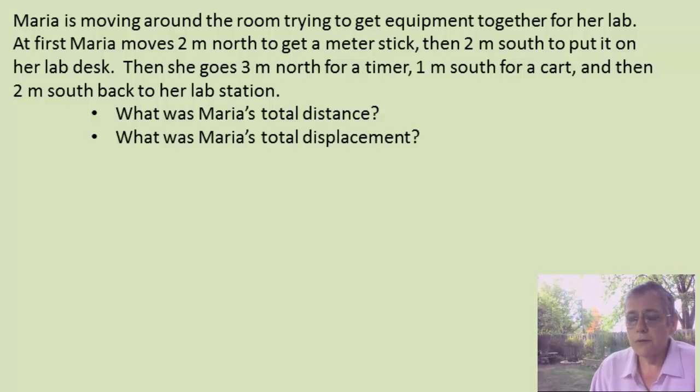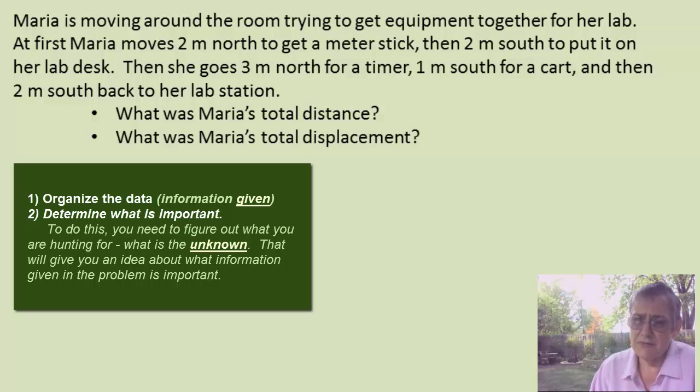Now in physics problems, the first thing you need to do is organize all the data. In order to organize that information, you have to know what you're hunting for. What is the unknown? What am I trying to solve for? What kind of equipment she needs for this lab? In which case meter stick and timer and cart is important. But no, I'm trying to find total distance and total displacement. So to make sure I don't forget what I'm hunting for, I always write it out.